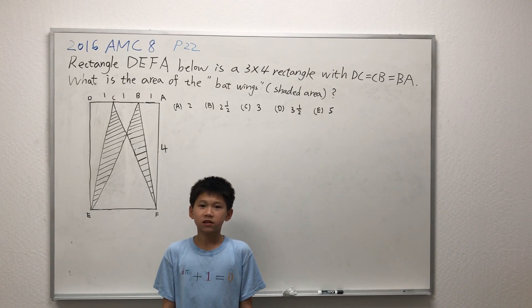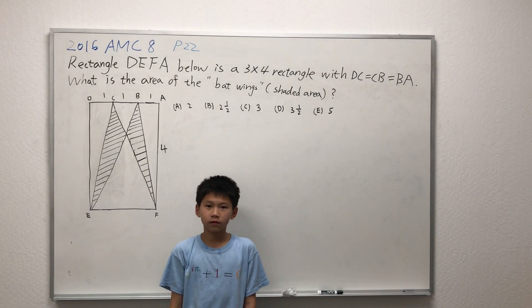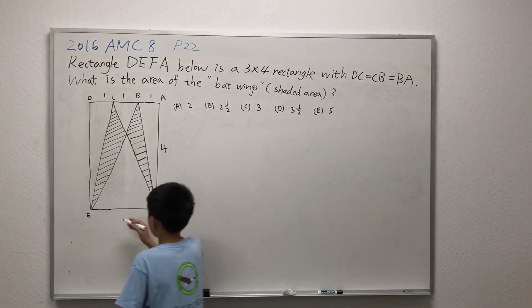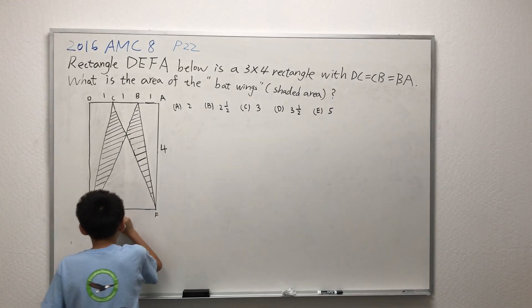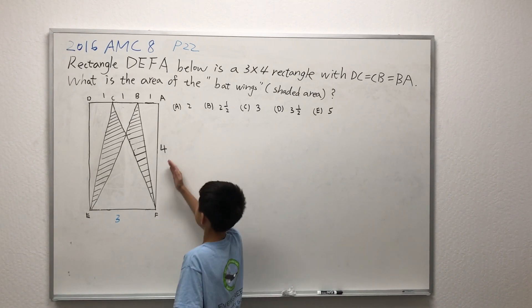The problem gives us that the line segments DC, CB, and BA all equal to 1. Therefore, line segment EF is equal to 3. It also gives us the line segment AF is equal to 4.